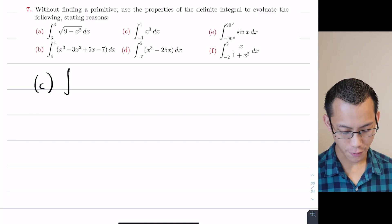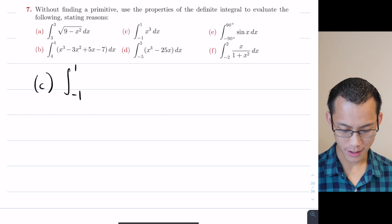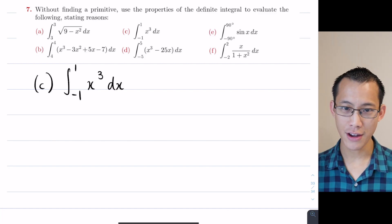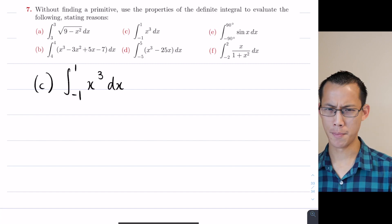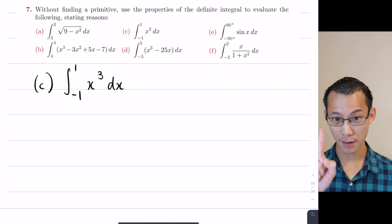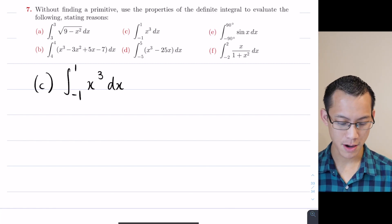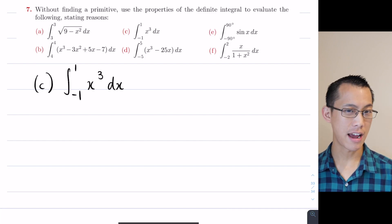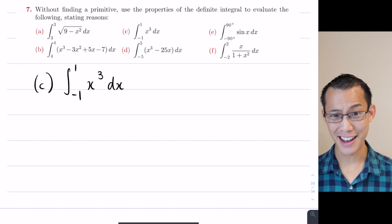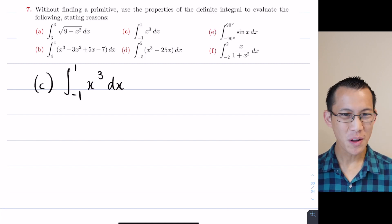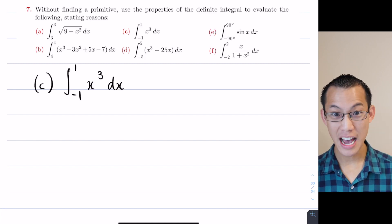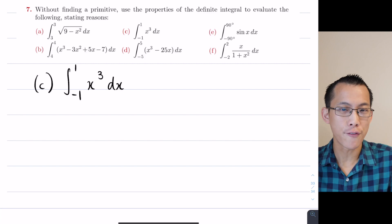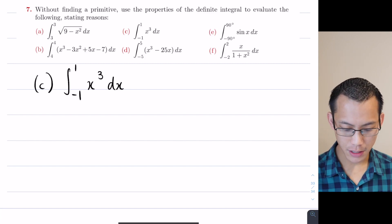We're integrating from negative 1 to 1 and the function is x cubed. To approach this you need to remember some properties of definite integrals, and it's also immensely helpful to have a picture in your mind. The question doesn't ask you to draw it, but once you draw it it becomes clear — and you don't have to memorise a list of arbitrary properties because the visual tells you what's going on.